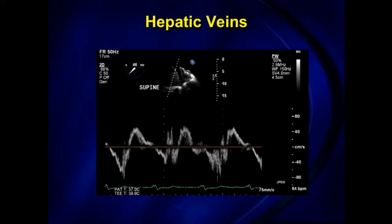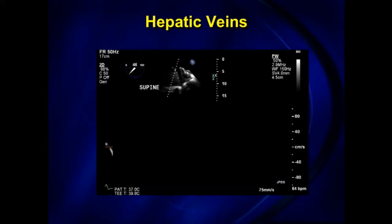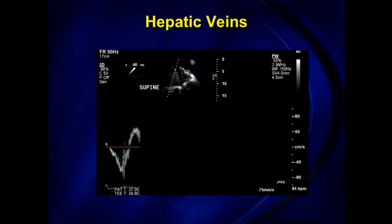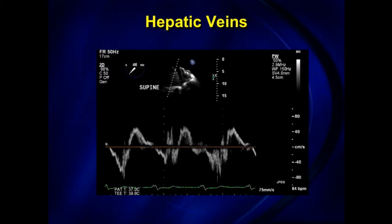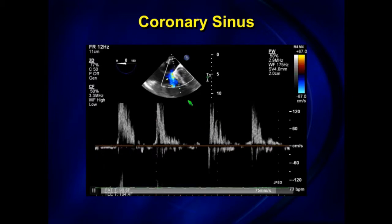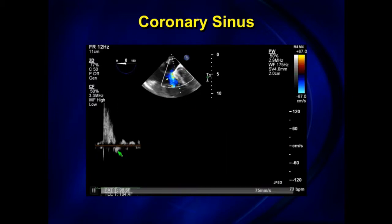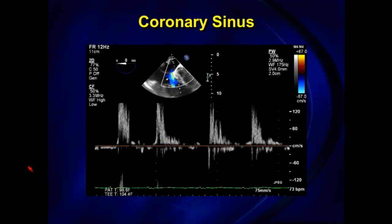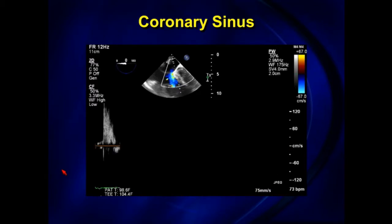Don't forget — from TEE you can view the IVC. If you go a little deeper you can see the hepatic veins and document hepatic vein reversal. This patient had a huge coronary sinus and torrential TR and actually had systolic reversals in the coronary sinus as well, analogous to pulmonary vein reversal.